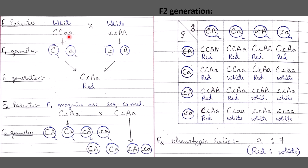Two varieties of white-flowered pea plants were crossed. One white variety can be obtained when one gene is dominant and the other complementary factor is recessive, and another variety when the dominant gene is absent and the complementary genes are present. These two genotypes give two varieties of white-flowered pea plants. The genes segregate into gametes, which fuse to form the F1 hybrid with a heterozygous genotype producing red color, because both the chromogen and anthocyanine-producing genes are present together, complementing each other.